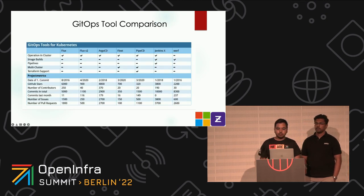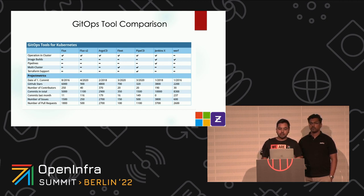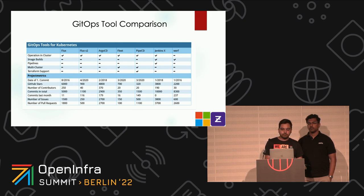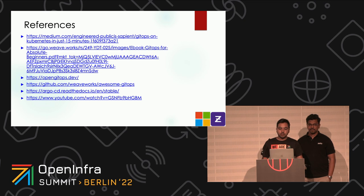Here are some comparisons of different GitOps tools available in the open-source ecosystem. This information may be slightly outdated as the community is continuously evolving, but popular tools include Flux V2, Argo CD, Pipe CD, and Jenkins X. I'd like to thank all the awesome blog posts available online, as they were really useful in putting together the content for this talk.